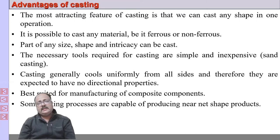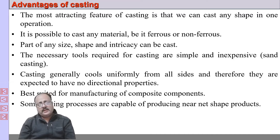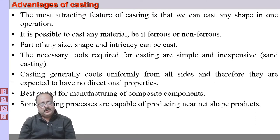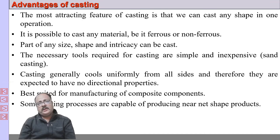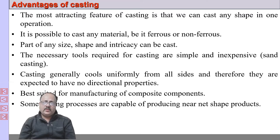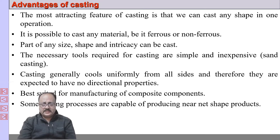Casting generally cools uniformly from all sides, so if your design is proper, the properties are uniform from all sides. When making the metal, you can add different alloying elements, different phase materials, and manufacture composite components also. Some casting processes are capable of producing components which are almost ready to use, or require only a very small amount of post-processing. These are the advantages of casting.